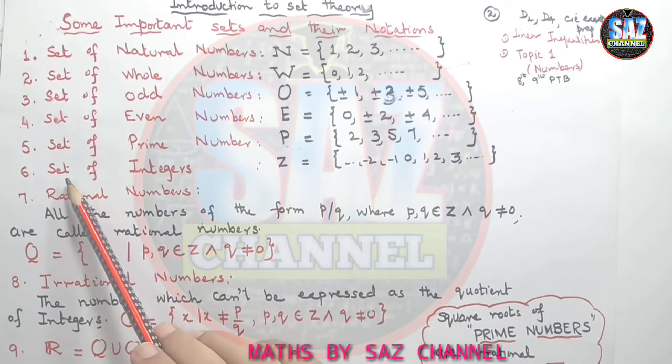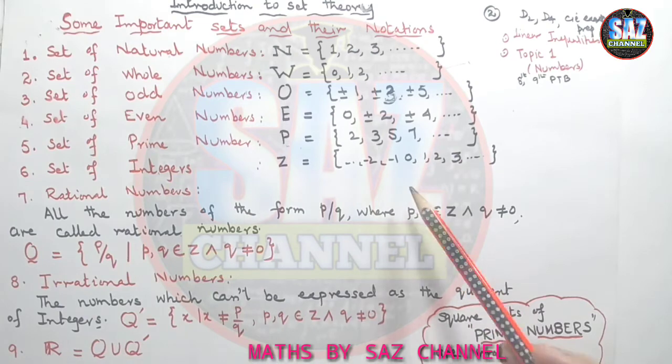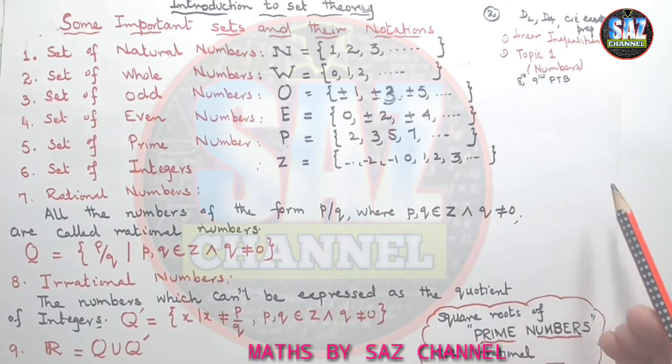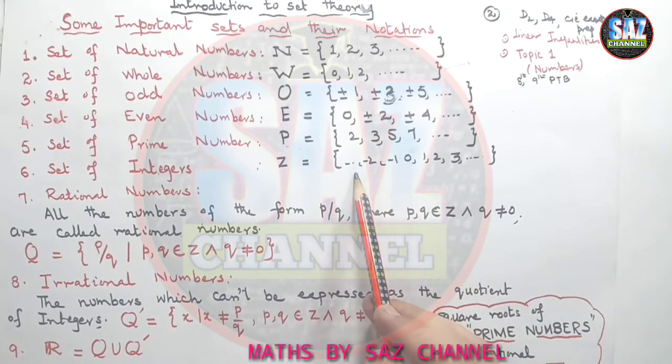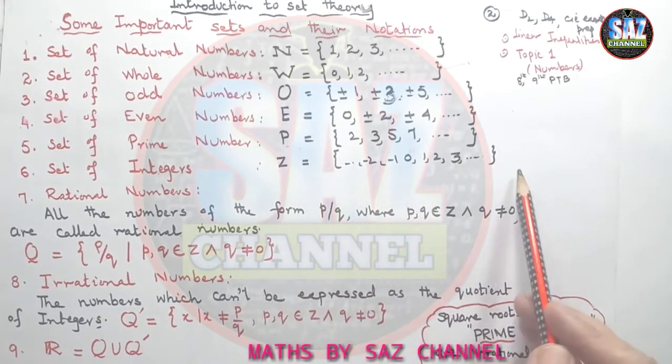Coming to the next set, that is the set of integers. Set of integers has 0 at the middle place, positive natural numbers towards the right hand side and the negative natural numbers towards the left hand side. Your integers basically make your number line.